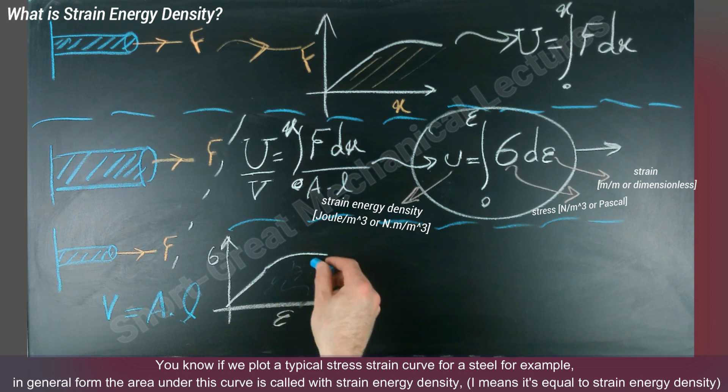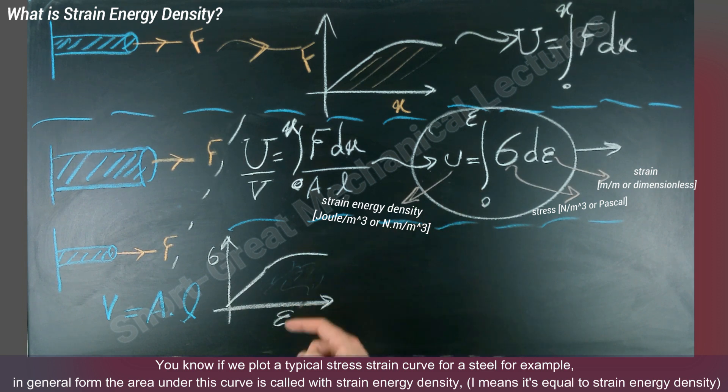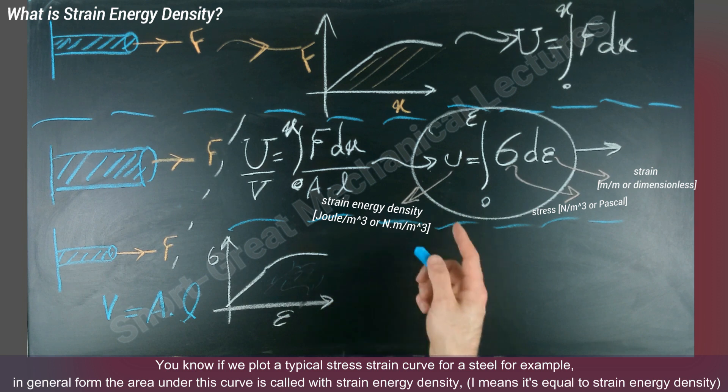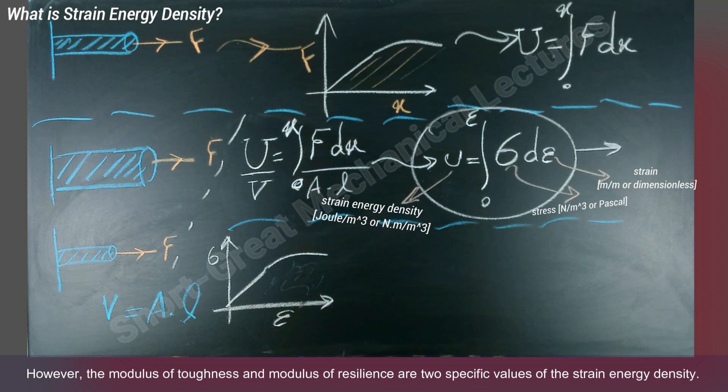I mean, it's equal with strain energy density. But you can find the strain energy density like till here or here or here. However, the modulus of toughness and modulus of resilience are two specific values of the strain energy density.